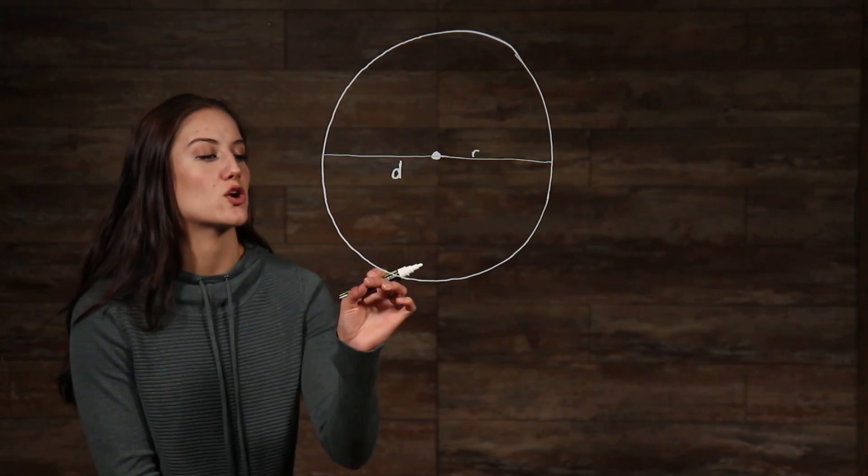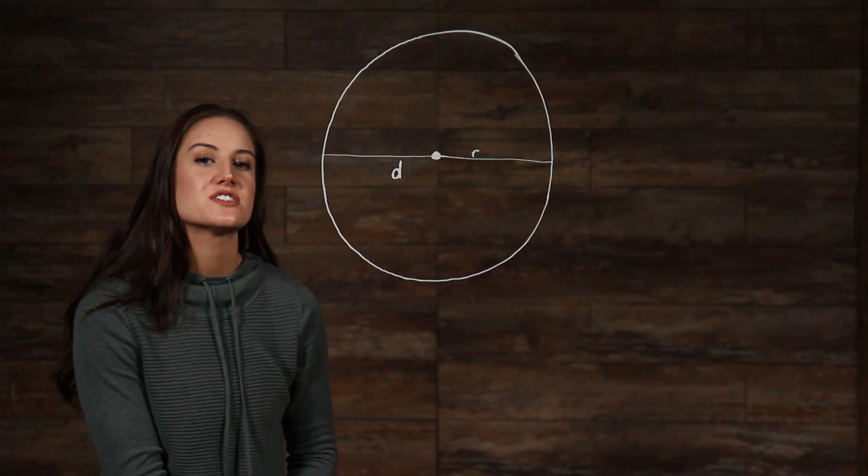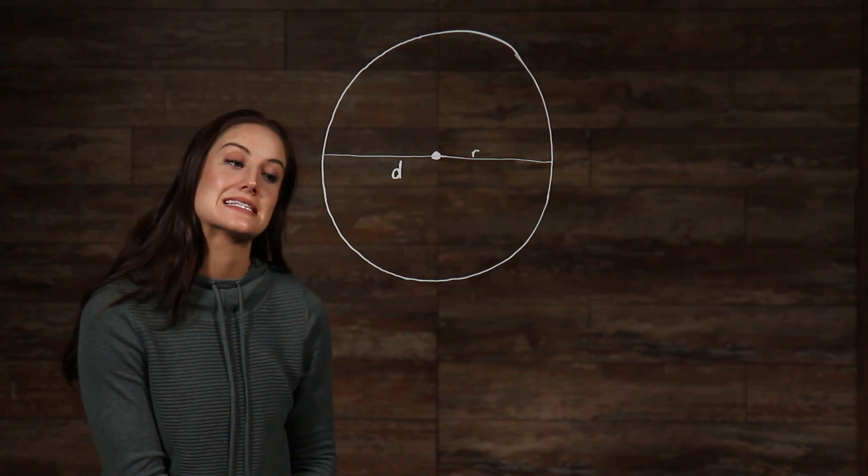Now, circumference is the distance around the outside edge of this circle. Circumference is represented by the upper case letter C.